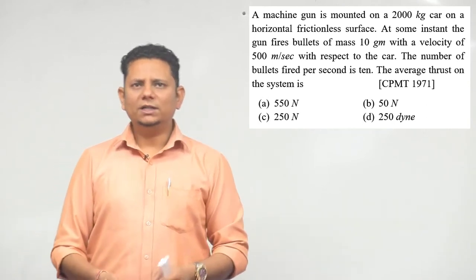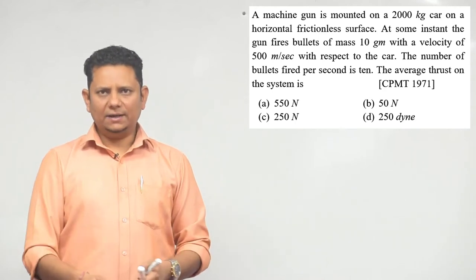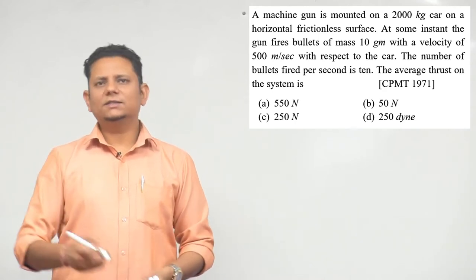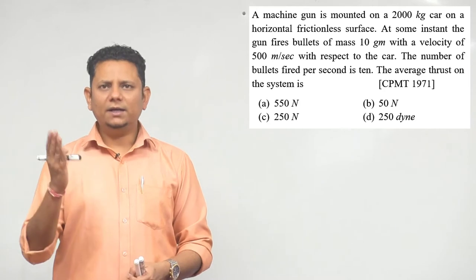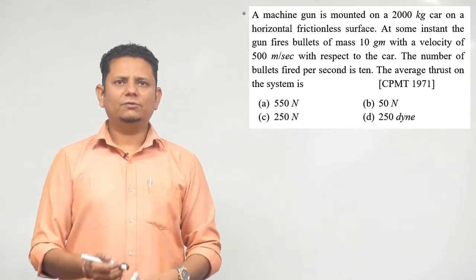The question is, number of bullets fired per second is 10. The question asks for the average thrust on the system. The options are 550 newton, 50 newton, 250 newton, or 250 dyne.